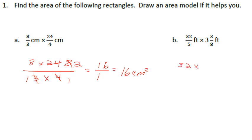On problem B, I have 32 fifths times 3 and 3 eighths. I need to convert 3 and 3 eighths — there are 8 eighths in 1 whole, 16 eighths in 2 wholes, so there'll be 24 eighths in 3 wholes. Plus 3 extra eighths gives me 27 eighths.